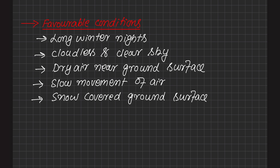The first favorable condition is long winter nights. Loss of heat by terrestrial radiation from the ground surface during the night may exceed the amount of incoming solar radiation. If the heat loss is greater, the surface becomes cooler easily — that happens in long winter nights — and the temperature inversion condition is created in that environment.